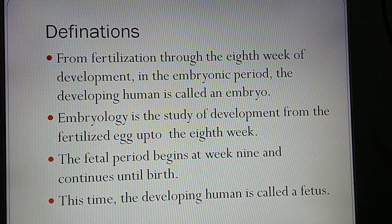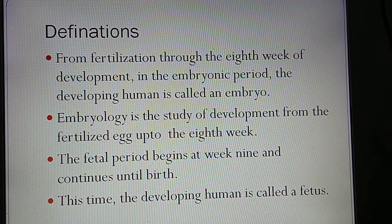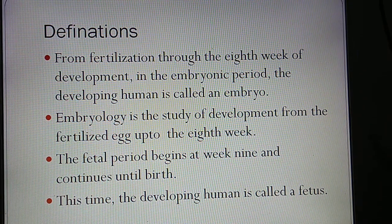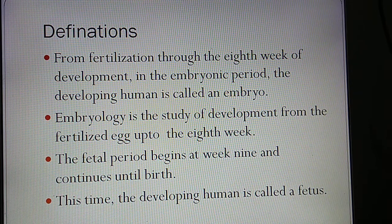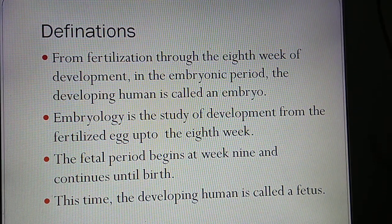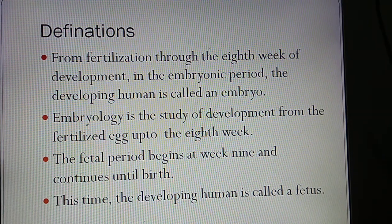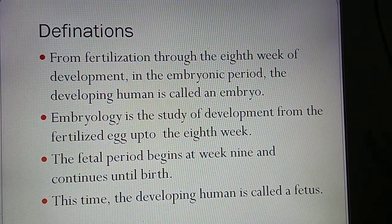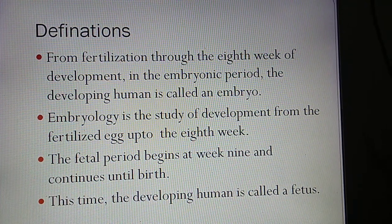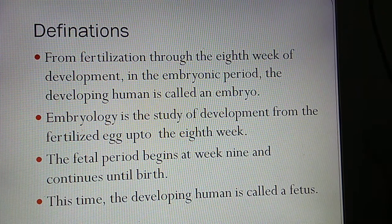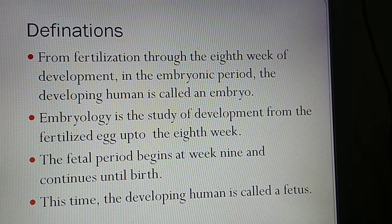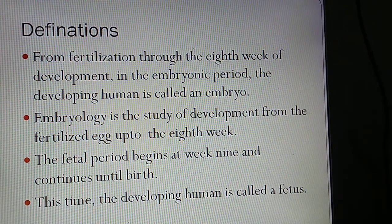From fertilization through 8 weeks of development, called the embryonic period, the developing human is called an embryo. Embryology is the study of development from the fertilized egg up to the 8th week. The fetal period begins at week 9 and continues until birth; during this time the developing human is called a fetus.